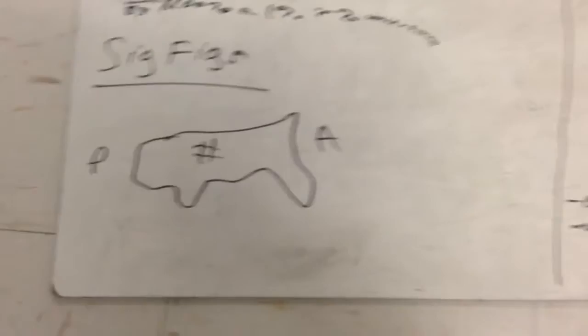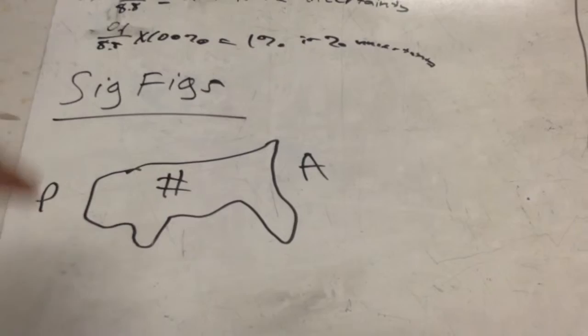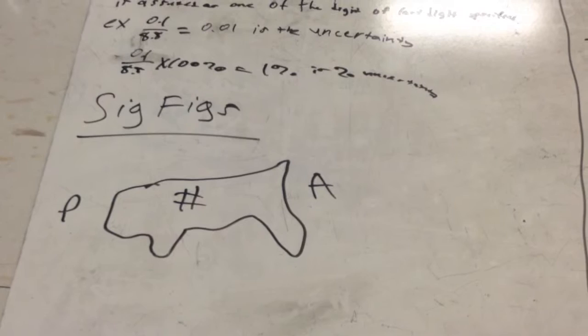Now significant figures measure the accuracy. Basically, you draw a map of the US with the Atlantic Ocean and Pacific Ocean. When the decimal is absent, you start counting from the right side. You start at the first non-zero digit and don't stop counting.